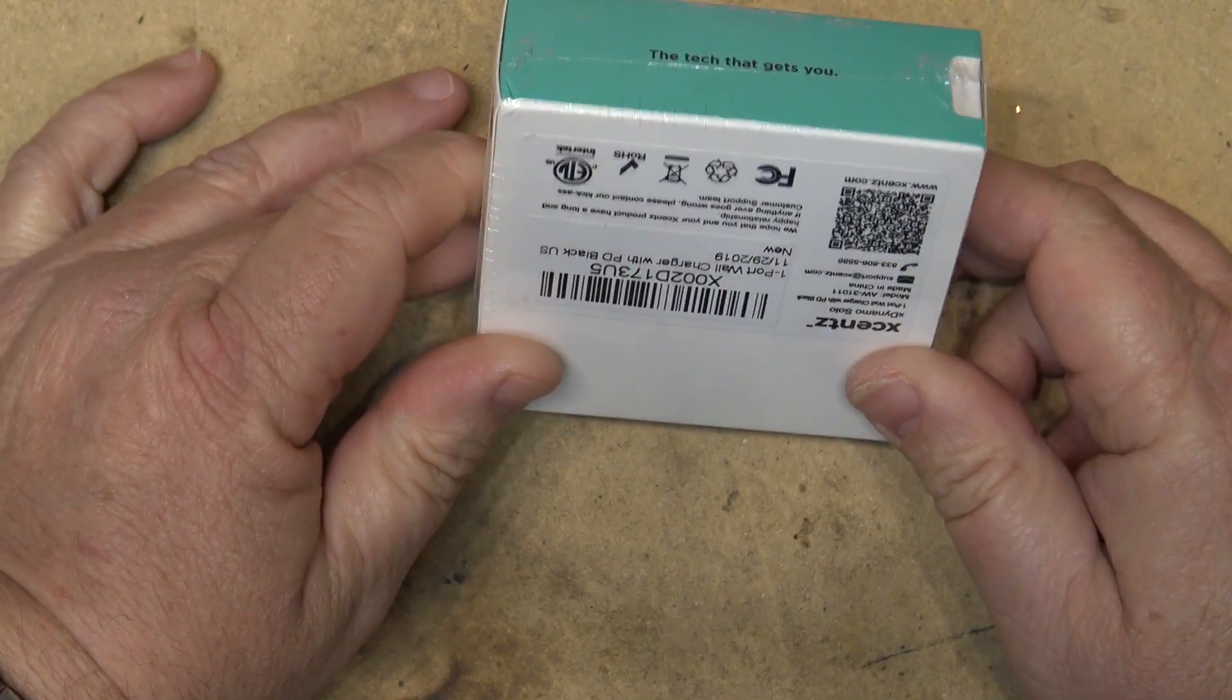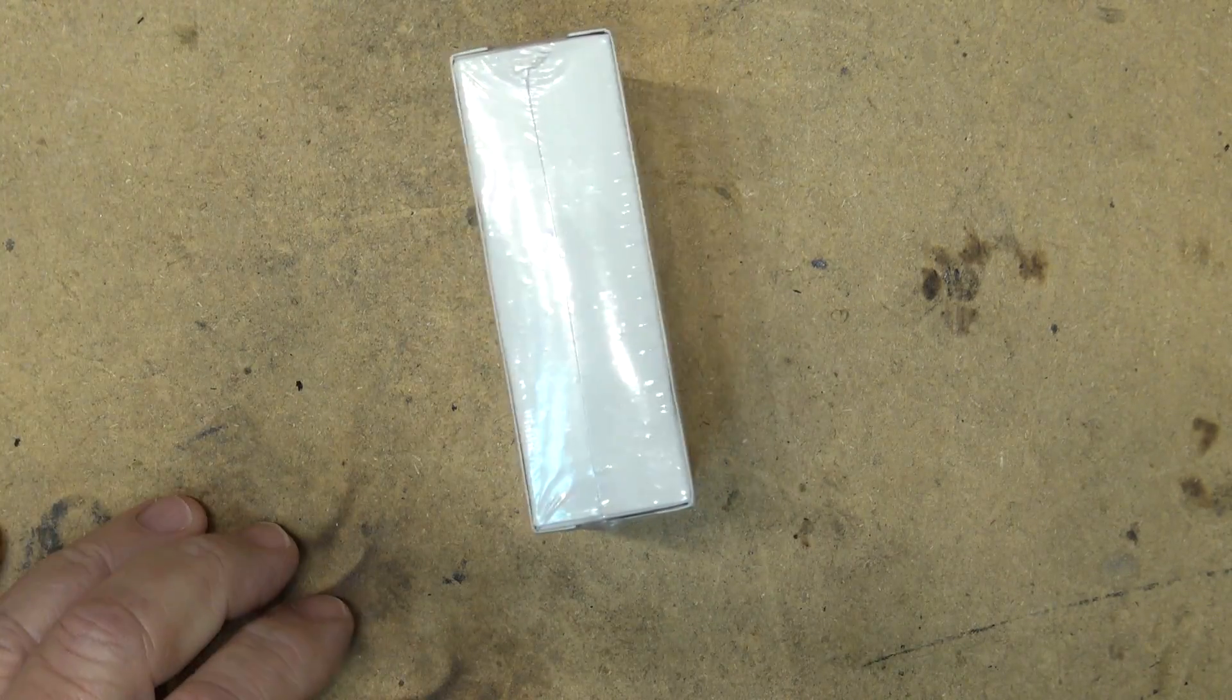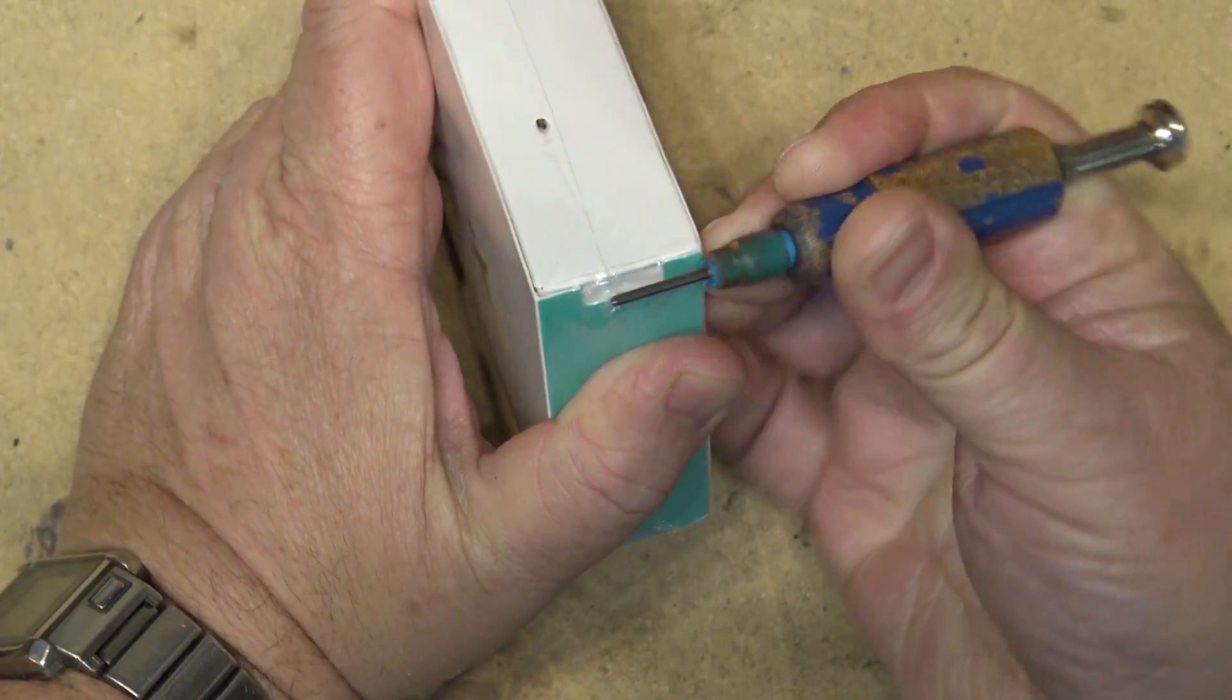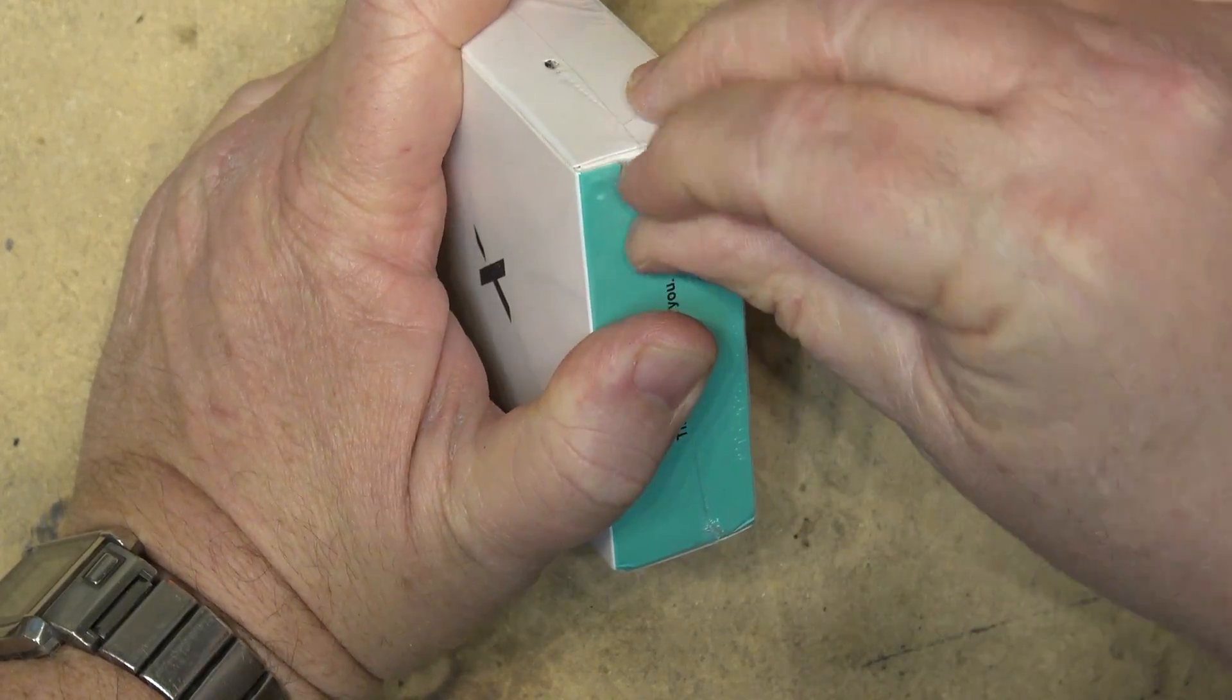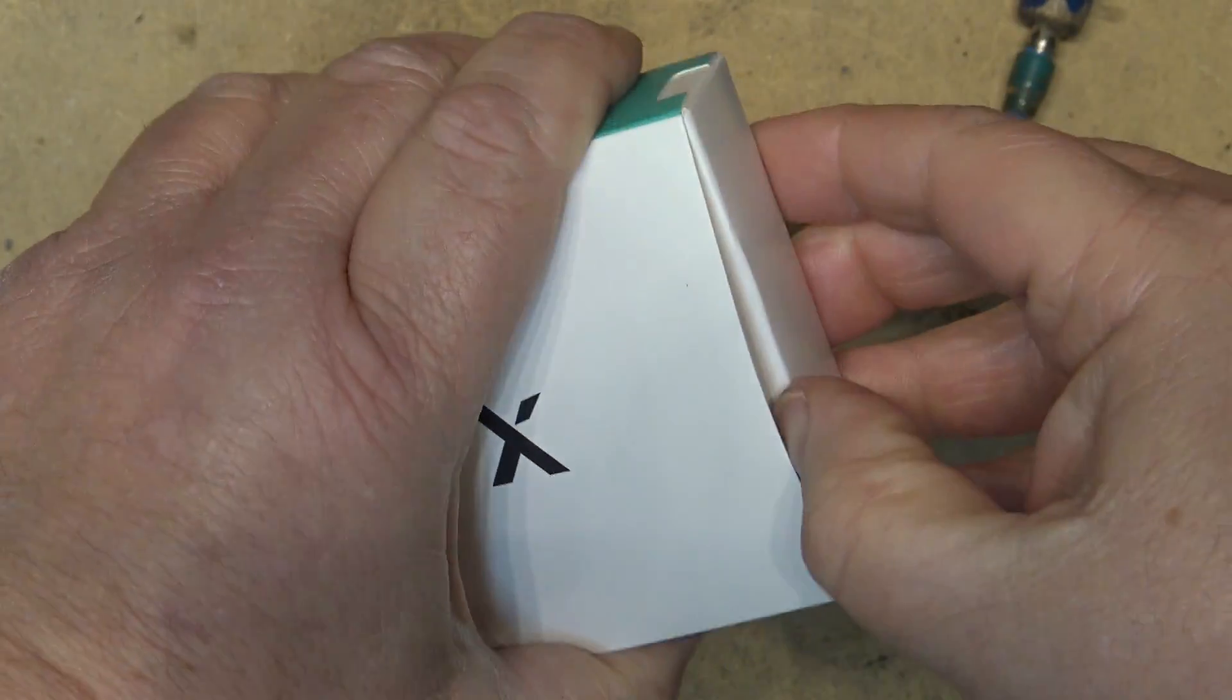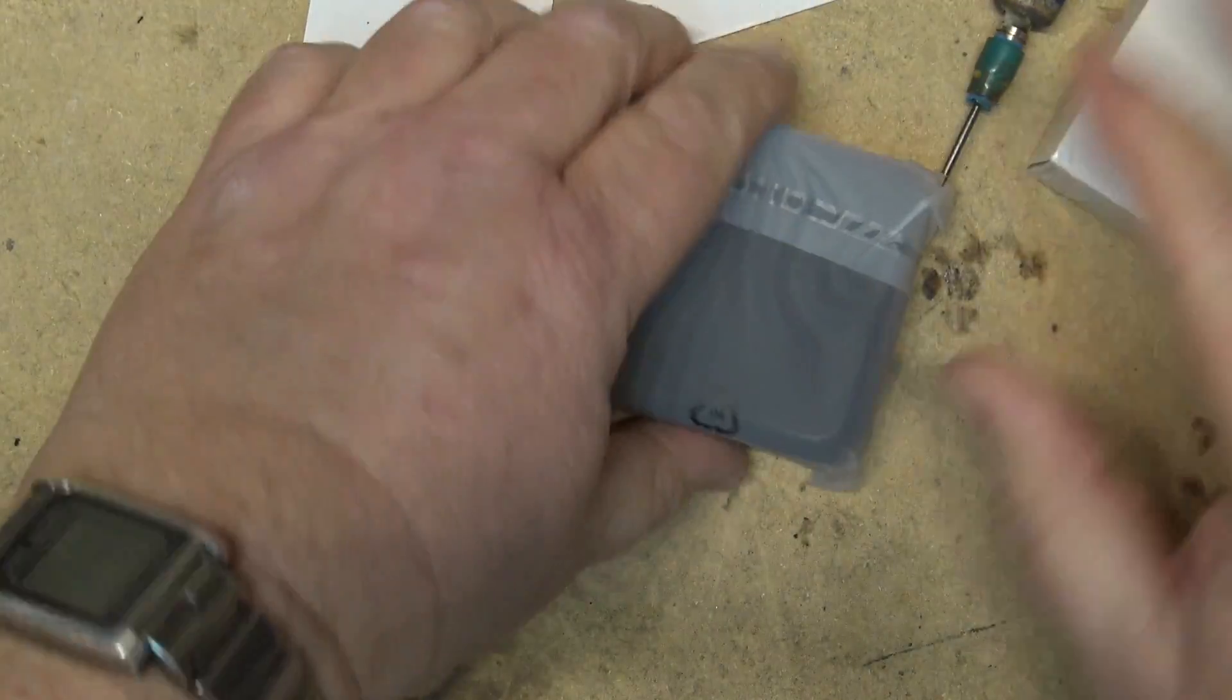They've got an Xcent charger - it's a one-port wall charger. Let's take a look at this one and run it through its paces. Well, that didn't go as planned. I was going to try and rip the plastic and I put a hole in the box. The charger slides out of the box like that.